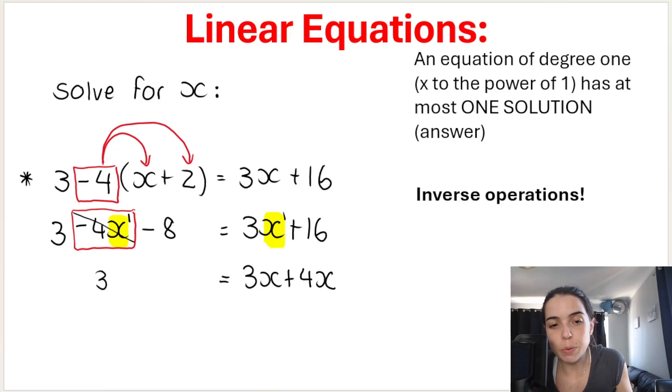Then we've got the 3, which stays here, the negative 8, which stays here, and over here, the positive 16. I want to get rid of it from that side of the equation. So I need to minus 16 on this side, and then minus 16 on this side. So you have got 3x plus 4x is 7x. And here I've got 3 minus 8, which is negative 5, minus 16, which is negative 21.